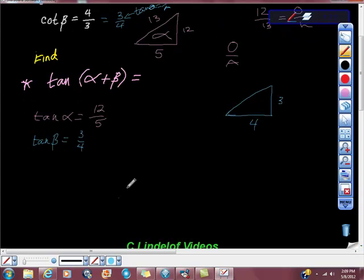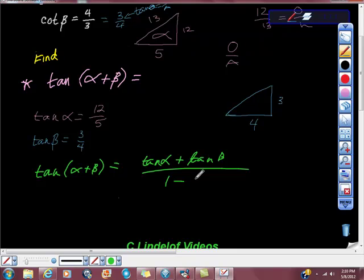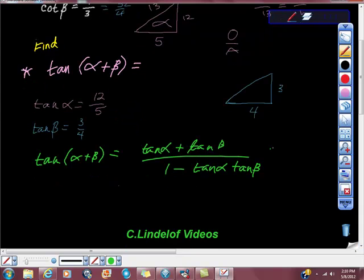What is the formula here? Tan(α+β) equals tan(α) plus tan(β), all over 1 minus tan(α) times tan(β). Just fill in the blanks with the algorithm we memorized.